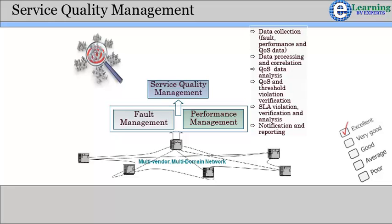Service quality management summarized consists of: data collection — fault, performance, and QoS data — data processing and correlation, QoS data analysis, QoS and threshold violation verification, SLA violation verification and analysis, and notification and reporting.